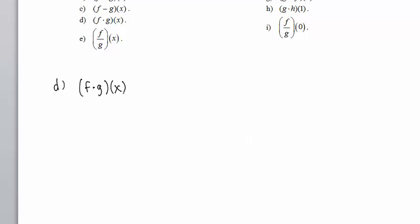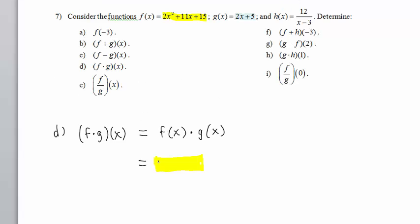Part D, F times G of X. This means F of X times G of X. F of X is 2X squared plus 11X plus 15. Since it's being multiplied with something else, and because it has more than one term, we will wrap it in parentheses. Here's the multiplication sign. 2X plus 5. Being multiplied and having more than one term requires us to wrap it in parentheses.